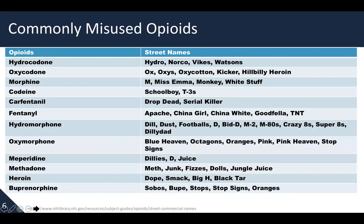Let's first look at commonly misused opioids. On the left you will see the generic name of opioids that are commonly misused on the street, and on the right you will see street names. For example, hydrocodone is often called hydros, norcos, bikes, or watsons — mainly watsons because of the brand name that is desirable with the highest street value for purchase or use on the street.